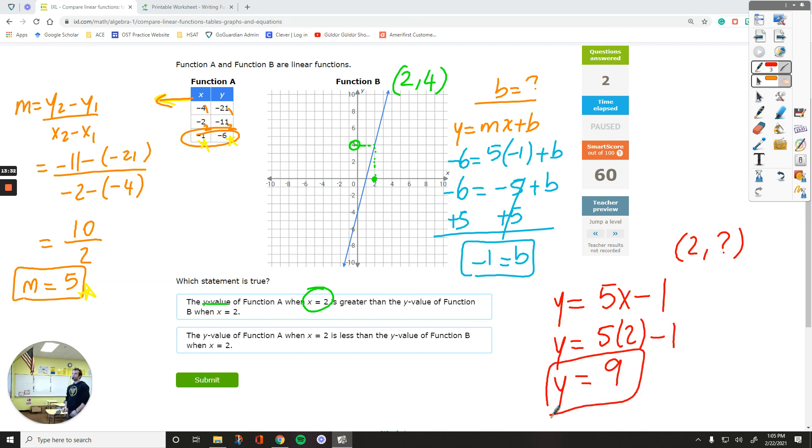The original y value for function b was 4. Now, the other one is 9. 4 is less than 9. So it would be this right here. Let me double check one last time. When we plugged in 2 for x, we ended up with 4. That number is less than 9. But the table is function a. I was going to pick the wrong answer.